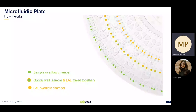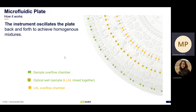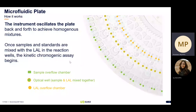You can see the metering chamber and the LAL overflow chambers here, which allows for precise dispensing of the samples and LAL to mix in the optical well. Here's a closer view so you can see the optical well and the sample and LAL mix together. The instrument oscillates back and forth so samples and standards are mixed with the LAL in the reaction wells. The kinetic chromogenic assay then begins and will take as long as traditional methods, depending on the standard curve you choose to run.